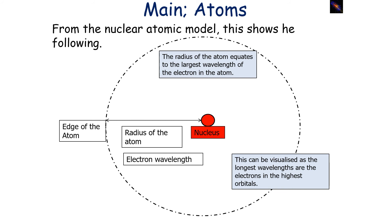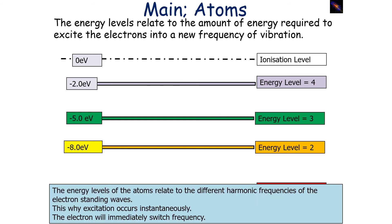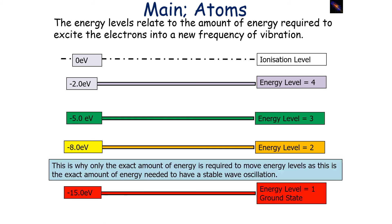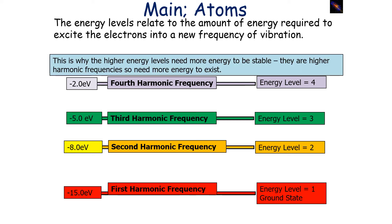The longest wavelengths correspond to electrons in the highest orbitals. Previously we've looked at energy levels relating to the amount of energy required for the electron to exist at a particular level, but the energy levels of the atom also relate to the different harmonic frequencies of the electron wave. This is why excitation occurs instantaneously — the electron immediately switches frequency from one harmonic wave to another — and why only the exact amount of energy is required to move between energy levels, as this is the exact amount needed for a stable wave oscillation.